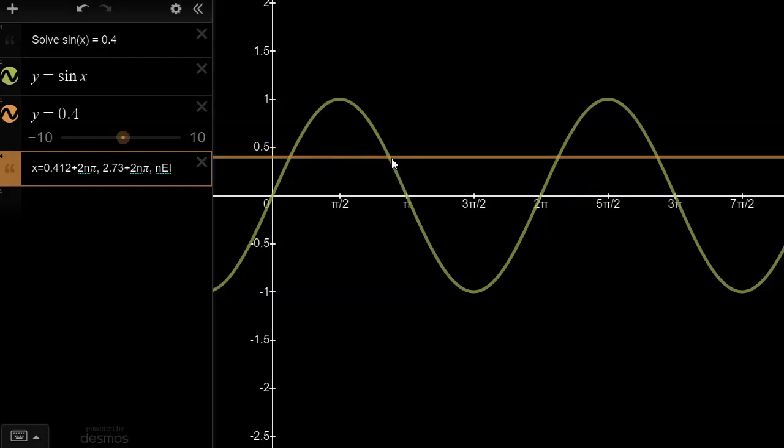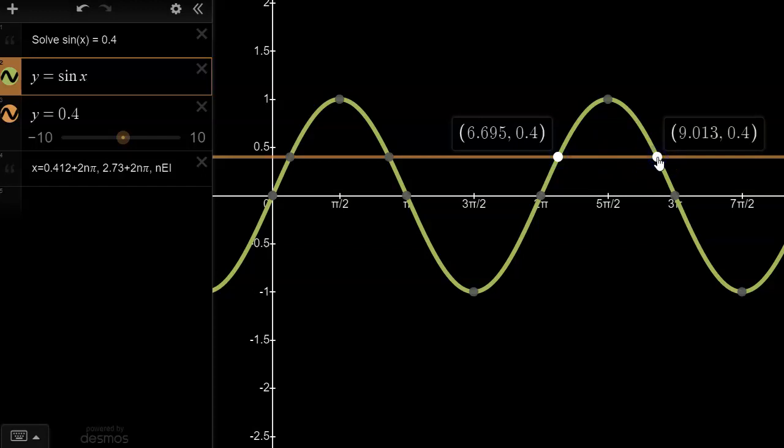If you extend that domain or change it in any way, say for example from 0 to 2π to 0 to 4π, then you will pick up additional points of intersection, and again, you would have to list those points as additional roots.